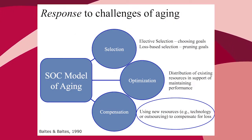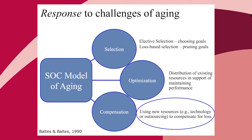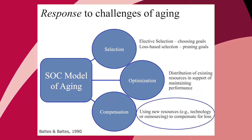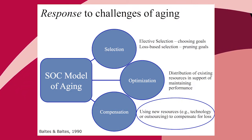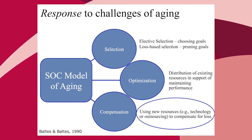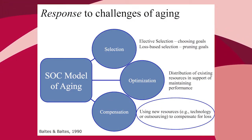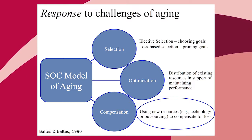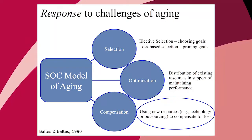There's a model in psychology about how individuals respond to the challenges of aging called the SOC model — Selection, Optimization, and Compensation. For a given individual, they might choose certain goals and not focus on everything, or prune goals because they can no longer do everything. Another avenue is to optimize available resources to maintain desired performance levels, or use new resources such as technology to compensate for loss.